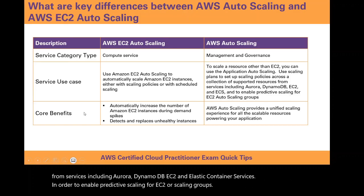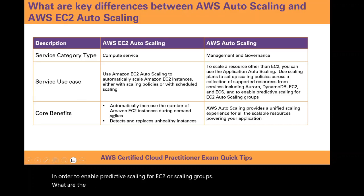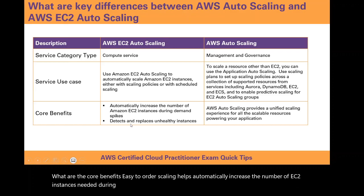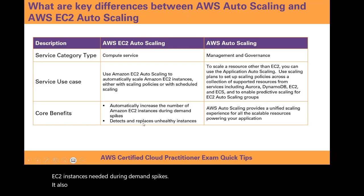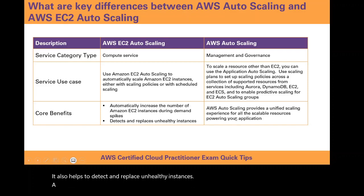What are the core benefits? EC2 autoscaling helps automatically increase the number of EC2 instances needed during demand spikes, and also helps to detect and replace unhealthy instances. AWS autoscaling provides a unified scaling experience for all the scalable resources that are powering your application.